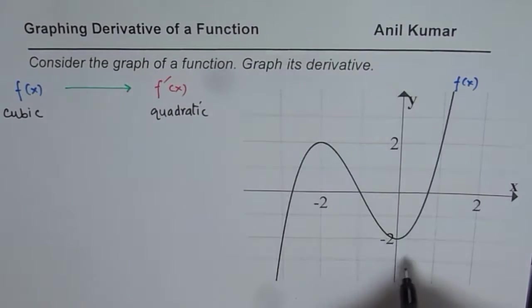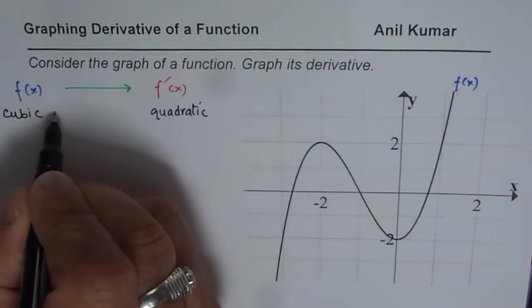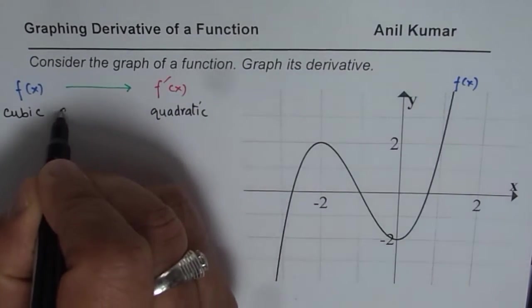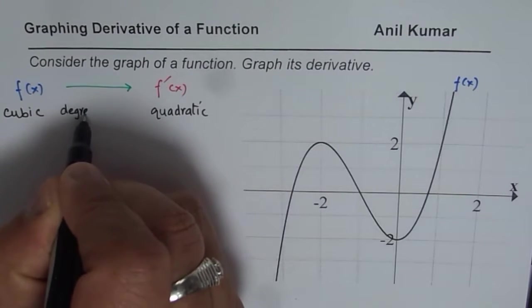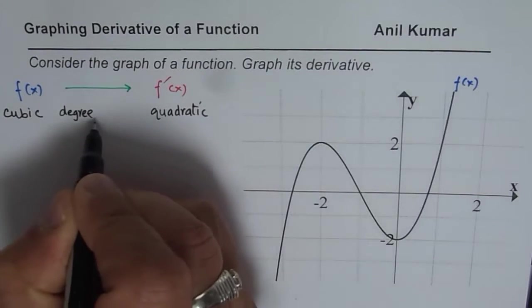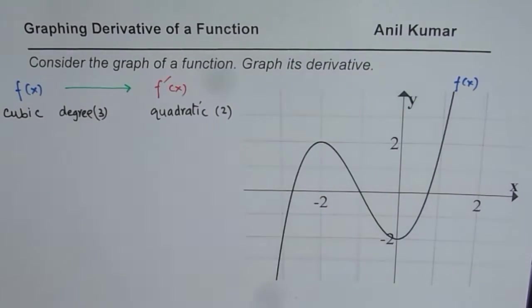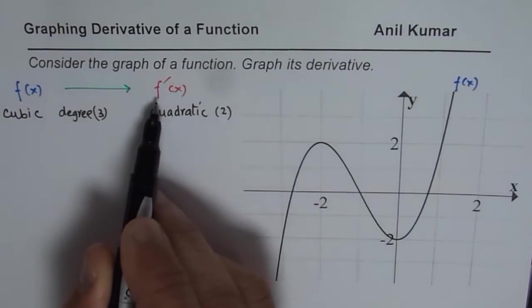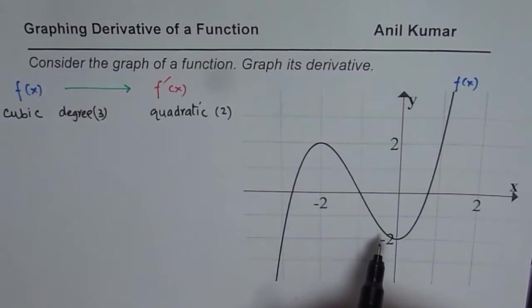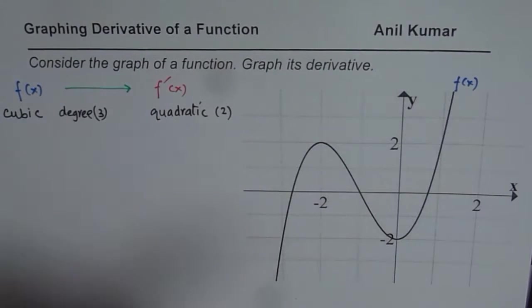That means one degree lower, right? So here it is kind of, that means degree changes from 3 to 2, right? So one degree lower will be your graph for the derivative. So that is one thing which we should understand.